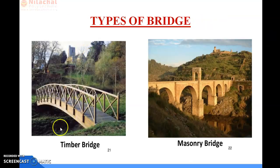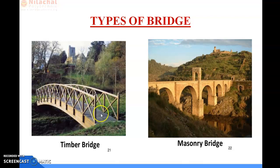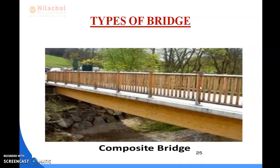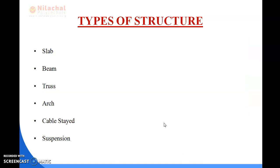Here you can see the images: this is a timber bridge, which is a short-span bridge constructed using timber. This is a masonry bridge, constructed using masonry work. This is a steel bridge, where the material used is steel. This is a concrete bridge, and this is a composite bridge.